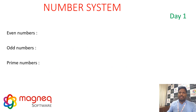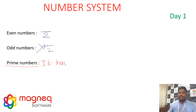Next, even numbers: which numbers are divisible by 2. Odd numbers: which are not divisible by 2. And prime numbers — definition: a prime number has only two factors, one and itself.